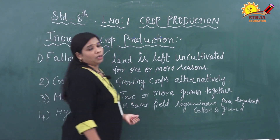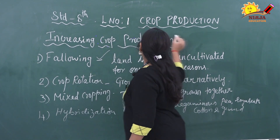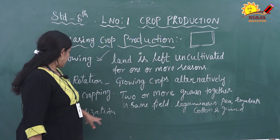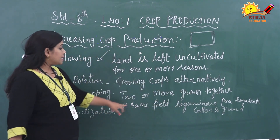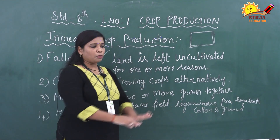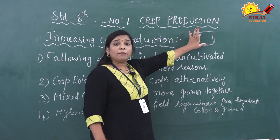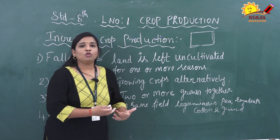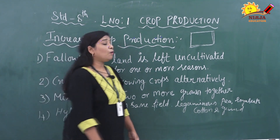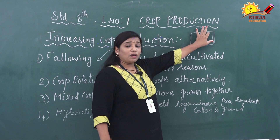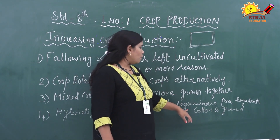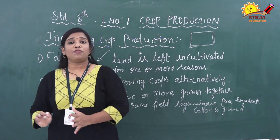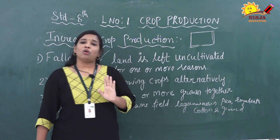The third one is mixed cropping. What is meant by mixed cropping? In one particular land, we cultivate two or three different types of crops grown in the same land — that is called mixed cropping. Two or more crops grown together in the same field is called mixed cropping. Suppose I am selecting three crops and growing all three in a particular land — I get different kinds of profit. If one or two crops are not growing well, the others still have a chance to grow nicely. For example, we can grow leguminous plants like pea or soya bean together with cotton or groundnut. This way we can select two or three different crops to cultivate together in a particular land.